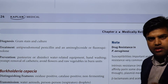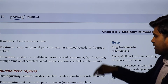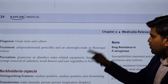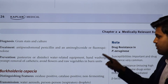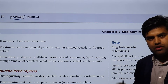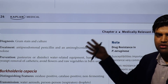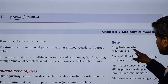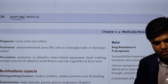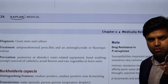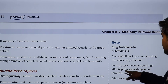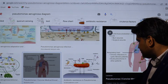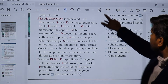Treatment involves anti-pseudomonal penicillins such as piperacillin and ticarcillin, combined with aminoglycosides like amikacin, and fluoroquinolones such as ciprofloxacin. Prevention includes pasteurization or disinfection of water-related equipment, handwashing, removal of catheters, and avoiding flowers and raw vegetables in burn units. Pseudomonas is a drug-resistant bug. It is not killed by all antibiotics, so sensitivity testing is mandatory. Resistance mechanisms include modified porins, plasmid-mediated resistance, beta-lactamases, and acetyltransferase enzymes.